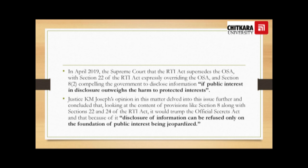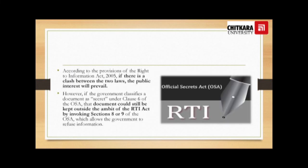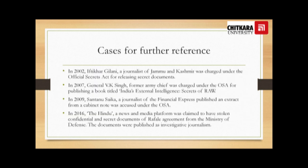Justice K.M. Joseph's opinion in this matter concluded that looking at the content of provisions like Section 8 along with Sections 22 and 24 of the RTI Act, it would trump the Official Secrets Act, and because of that, disclosure of information can be refused only on the foundation of public interest being jeopardized. According to the provisions of the RTI Act 2005, if there is a clash between the two laws, the public interest will prevail. However, if the government classifies a document as secret under clause 6 of the OSA, that document could still be kept outside the ambit of the RTI Act by invoking Sections 8 or 9 of the OSA, which allows the government to refuse information.